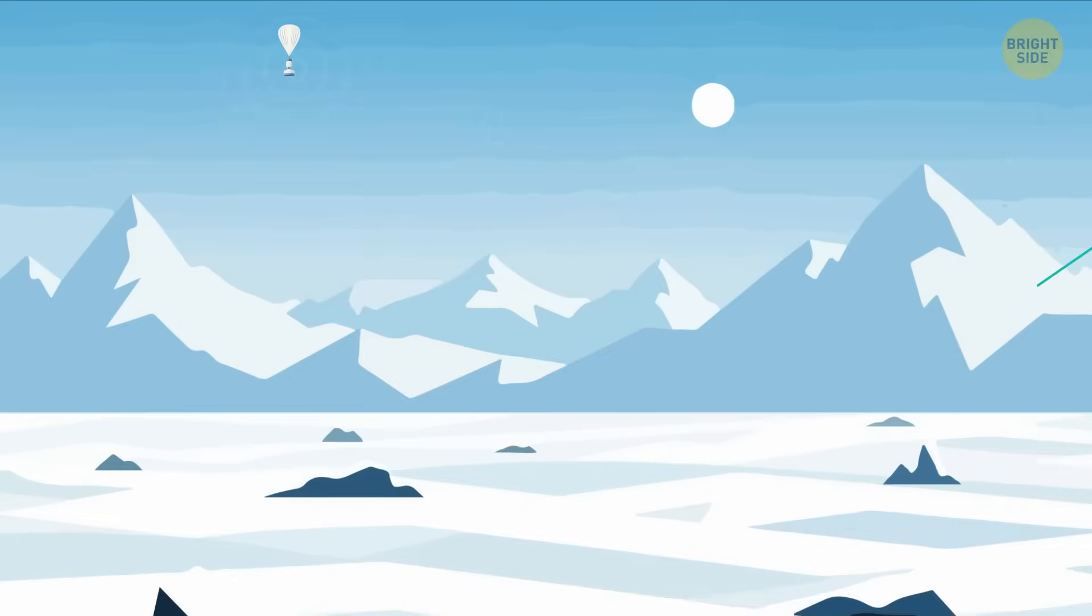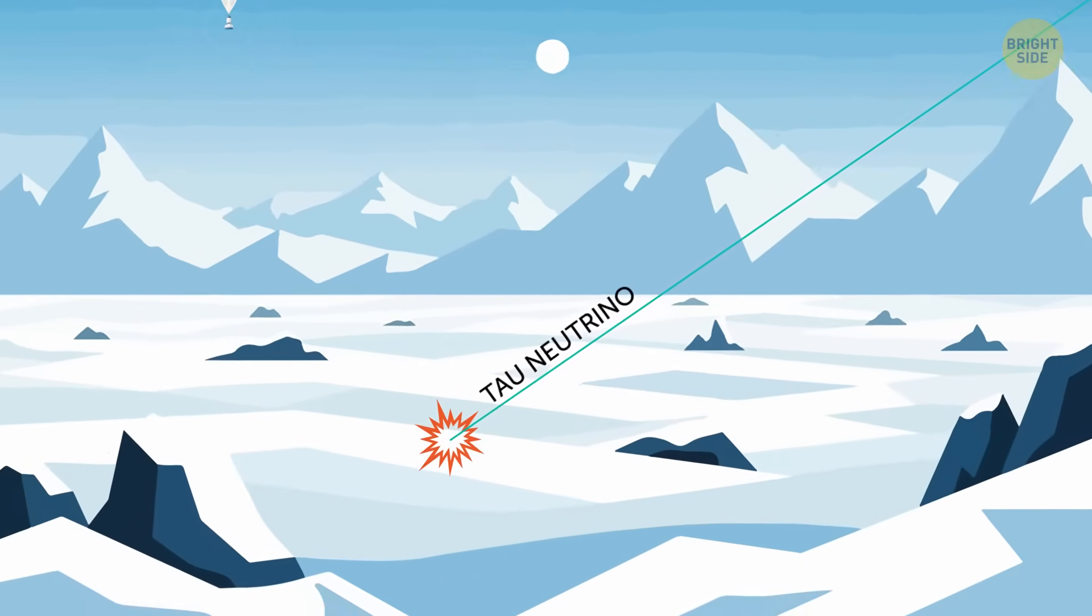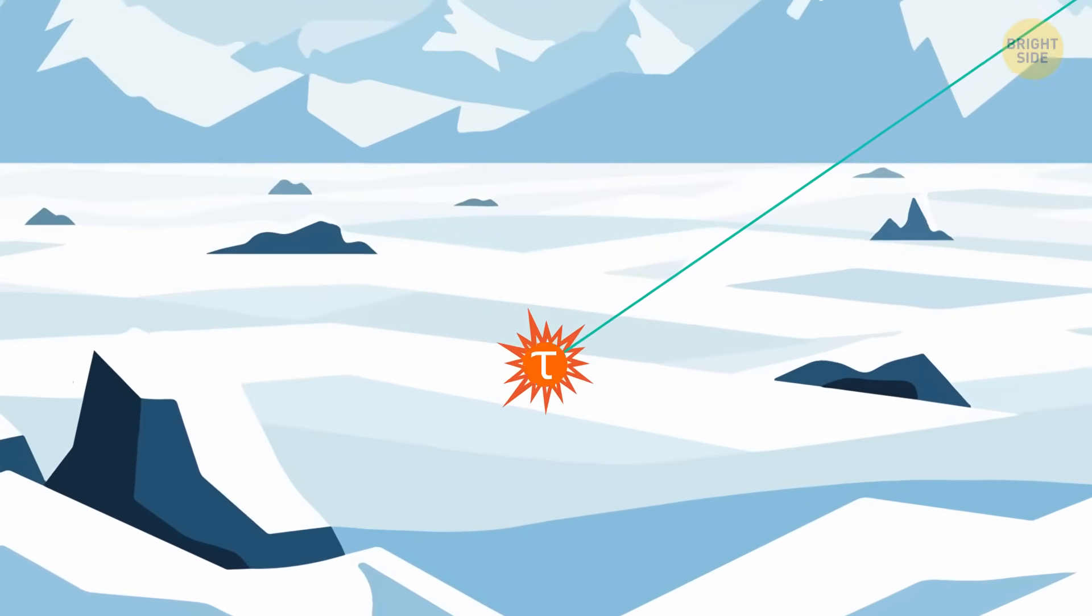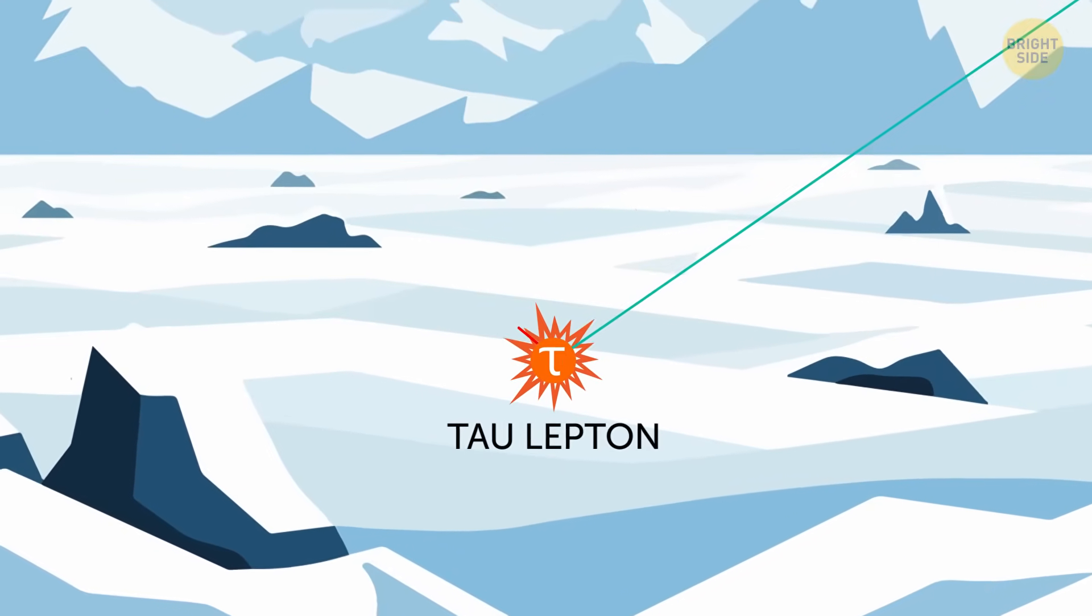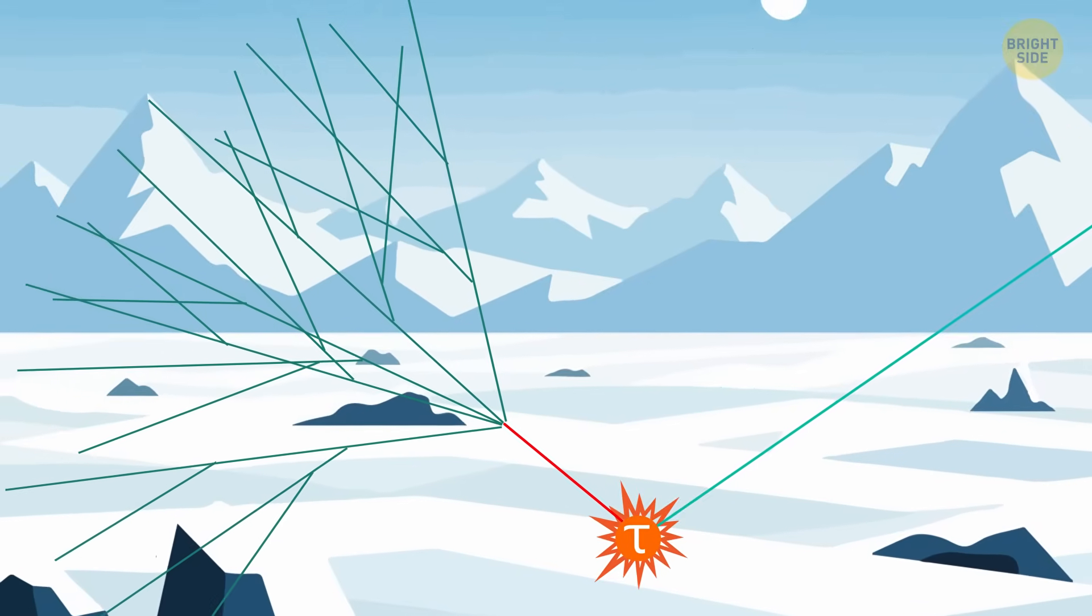When one of those super rare neutrinos, specifically a tau neutrino, hits the ice, it creates another particle called a tau lepton. That lepton then shoots out of the ice and starts breaking down, losing energy and turning into smaller bits.